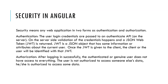How can we provide security in Angular? Security in web applications comes in two forms: authentication and authorization. For authentication, the user's credentials are passed to an authentication API on the server side, the credentials are validated, and a JSON Web Token (JWT) is returned. A JWT is a JavaScript object that contains information about the current user. Once the JWT is given to the client, the user will identify themselves with the JWT. For authorization, after logging in successfully, an authenticated user does not have access to everything — they are authorized to access only certain data.